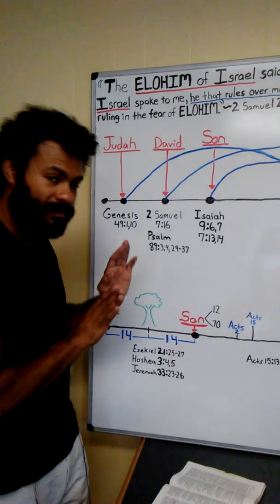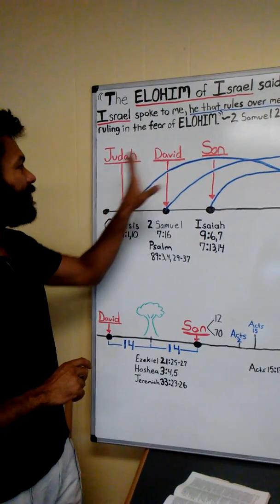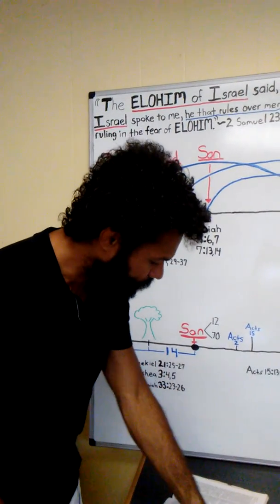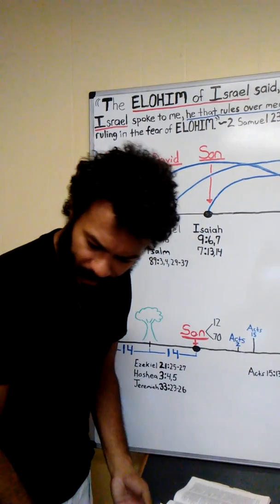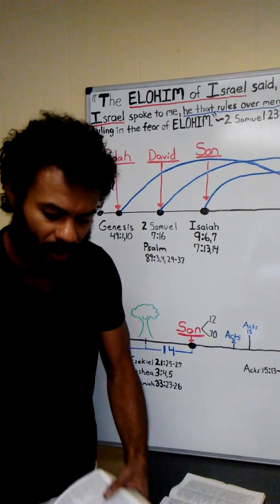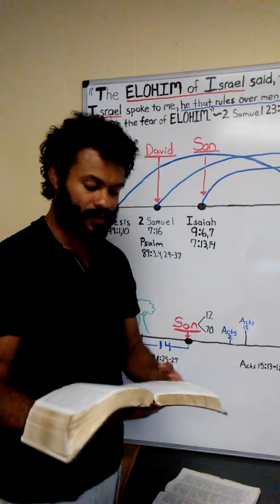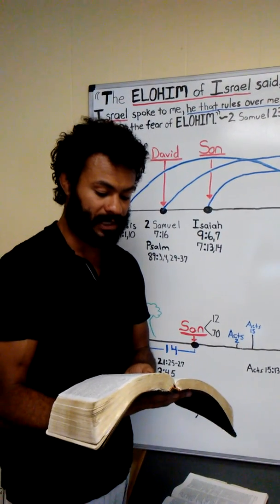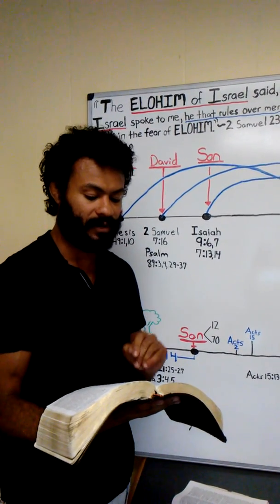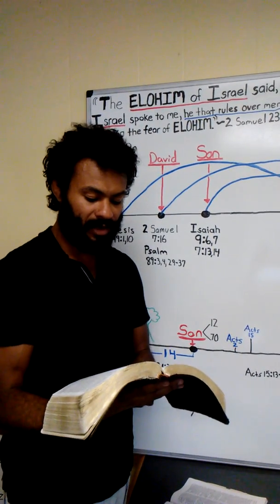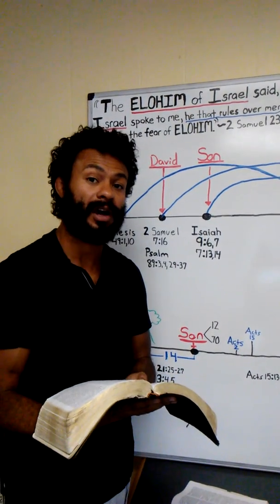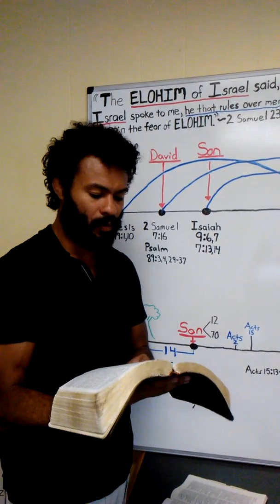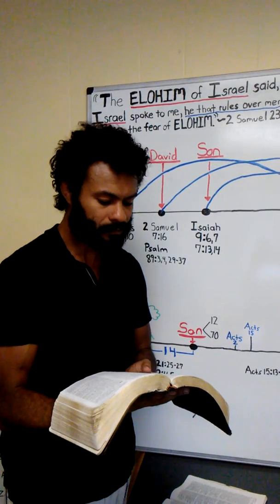Let's fine tune this to the prophecies of one coming through the line of David that has the right to rule. We can find this in Isaiah. Starting in Isaiah 7 verse 13: And he said, Hear now, O house of David. He's talking about the house of David. Is it a small thing for you to weary men, but will you weary my Elohim also? Therefore, Yahuwah himself shall give you a sign.